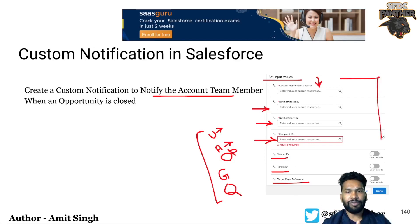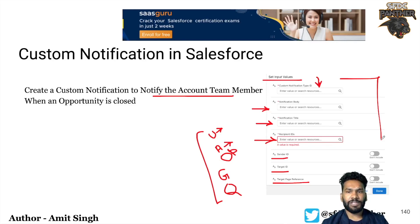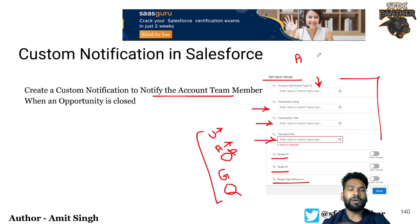Now, which kind of flow are we going to use here? Since this custom notification is an action, and as soon as there is an action, we will always use an after-record-save triggered flow.